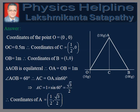AC is the perpendicular dropped from A upon OB. Therefore, C is the midpoint of OB. Therefore, OC is equal to 0.5 meters. Therefore, coordinates of C is equal to (0.5, 0). Also, OB is equal to 1 meter. Therefore, coordinates of B is equal to (1, 0).